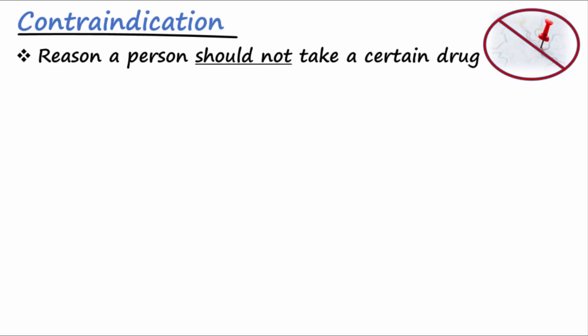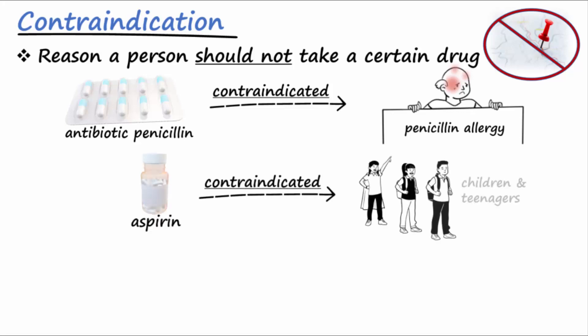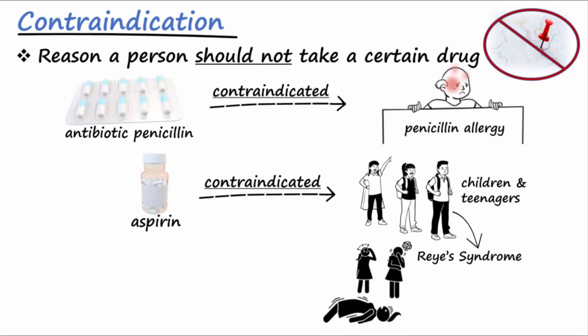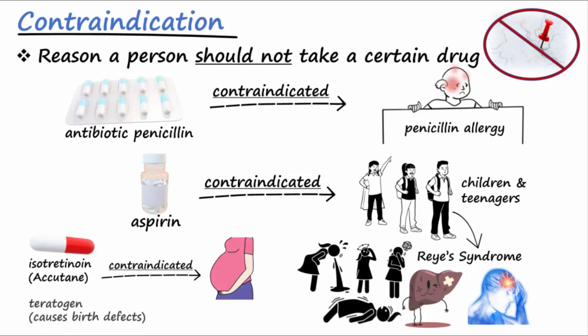Contraindication is a condition or reason that a person cannot or should not take a certain drug. For example, if someone had a serious allergic reaction to penicillin, we would say penicillin is contraindicated for this individual. Another example would be aspirin being contraindicated in children or teenagers due to risk for causing Reye's syndrome. Symptoms of Reye's include confusion, changes in personality, seizures, vomiting, and liver and brain damage. So we would say aspirin is contraindicated for children and teenagers. Isotretinoin or Accutane is contraindicated in pregnant women because it's a teratogen and causes birth defects.